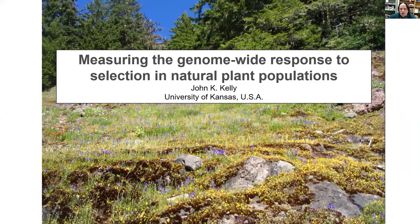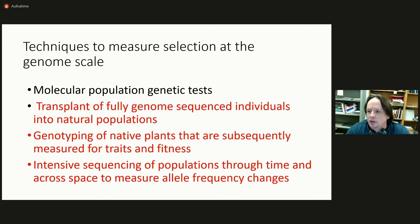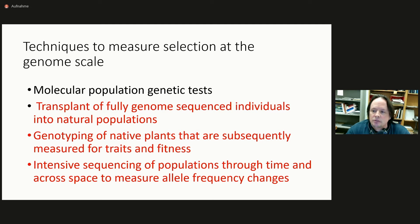I'm going to focus on methods a bit, given that might be the broadest interest to this audience, and specifically techniques to measure natural selection at the whole genome scale. Historically, this has been done primarily with molecular population genetic methods and tests, where you look for the historical signature of selection in patterns of variation. What I want to talk about today are methods for using genomic data in contemporary studies of ongoing selection, and I'll contrast two major methodologies that differ in the detail of the experimental method.